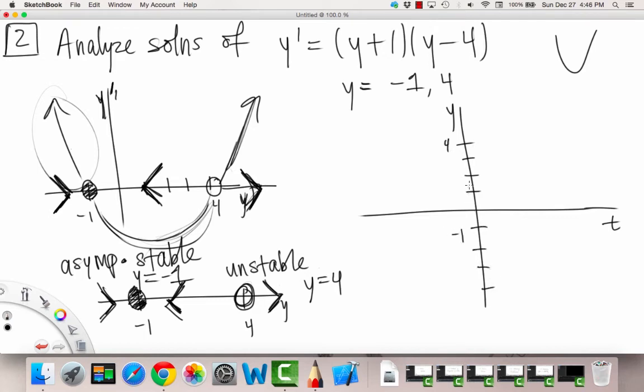Negative 1 is right there. We're just going to put our dots on there. Negative 1 and 4. We're going to fill in that negative 1, because it's asymptotically stable.